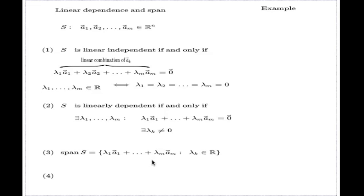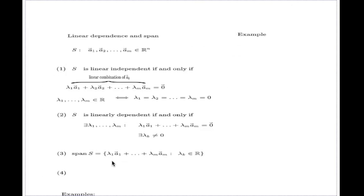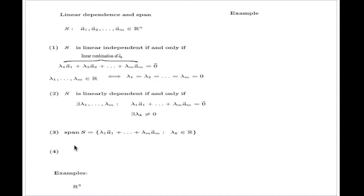And the other thing which you have to know, we'll look at this closely again too later, but I mention it here because it goes nicely with these other three definitions. It says a set S is a basis of Rn. It's a basis when two things are satisfied. One of them, S is linearly independent, and the other one, span of S delivers the whole Rn.